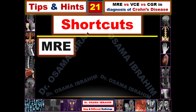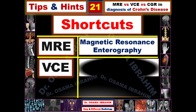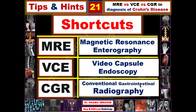In the first slide I will explain the abbreviations: MRE stands for magnetic resonance enterography; VCE refers to video capsule endoscopy; and CGR refers to conventional gastrointestinal radiography, which refers to barium studies. These are the three imaging modalities I will compare for imaging of Crohn's disease in today's presentation.